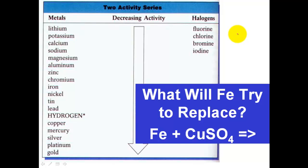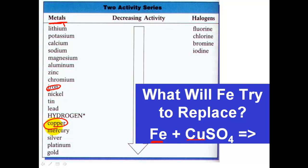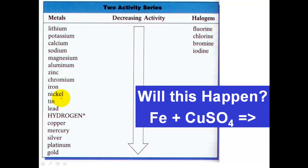We'll wrap up with one quick reaction: iron plus CuSO₄. What will iron try to replace? Since iron is a metal, we use the metal list. Which element in the compound appears on the same metal list as iron? That's copper. Iron will attempt to replace copper. Will it replace copper? Yes, because iron — the element alone — is more active than copper. This reaction definitely occurs because iron is more active. Hope this was helpful, and thank you for tuning in.